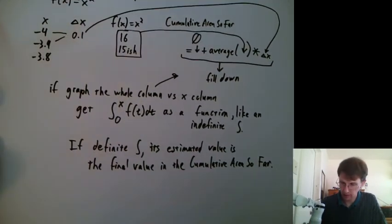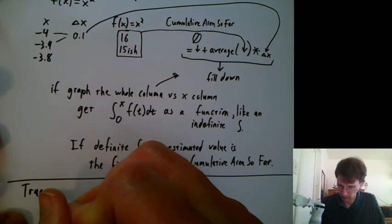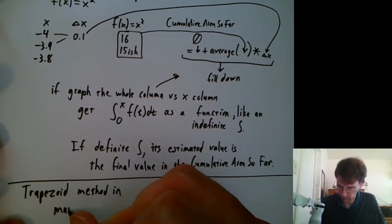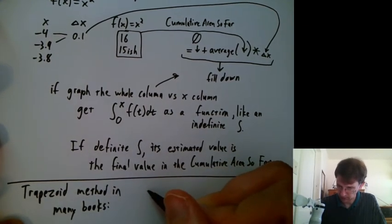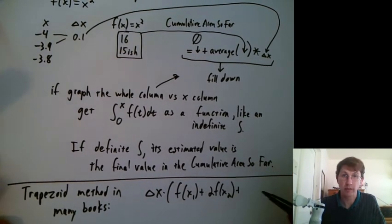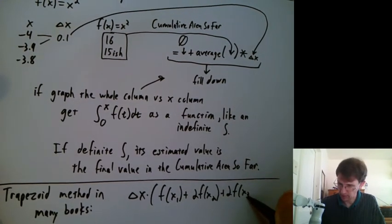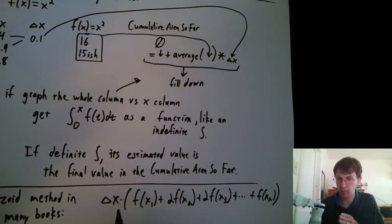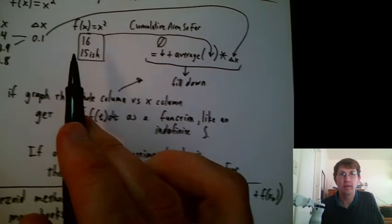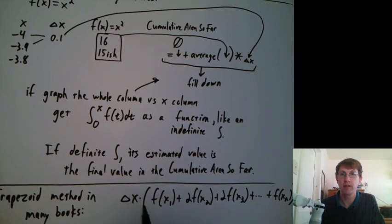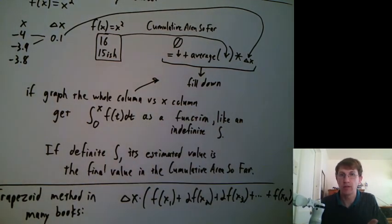There is a trapezoid method in the book and in many books that has a formula. It's something like delta x times f of x1 plus 2 f of x2 plus 2 f of x3 plus dot dot dot plus f of xn. And that's true, but it depends on the delta x being the same at every single step and that's not always the case in real life. So I like this method because it can automatically handle when the delta x is the same or isn't the same. But this one, if delta x isn't the same from time point to time point, you just get the wrong answer and there's no indication that it's wrong.